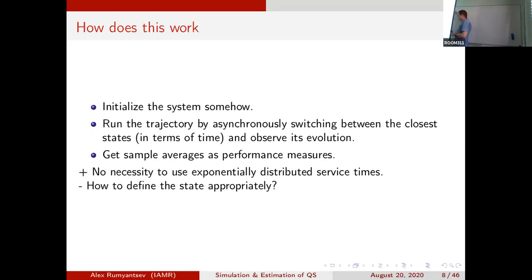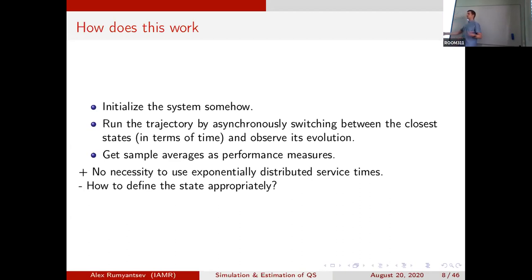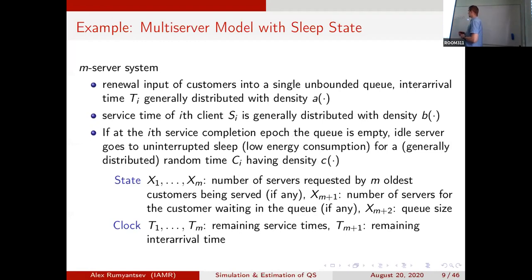We initialize the system from zero, run the trajectory while asynchronously switching between events, observe its evolution, and sample averages. We can update the estimate at each event so we do not need to keep the entire trajectory — just iterate within the events summing things up. A good point is that we are not restricted to exponentially distributed service times; arbitrary distributions and even state-dependent distributions may be used, provided we define the state appropriately.